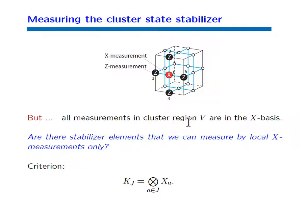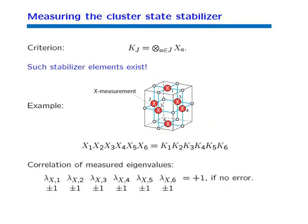All measurements in the cluster region V are in the X basis. Since we are primarily interested in quantum error correction in this region, which fills most of the cluster, and the qubits are measured in the X basis, we will not be able to read out the outcomes of Z-measurements locally. If all measurements are in the eigenbasis of sigma X, the stabilizer elements we can read out must be tensor products of sigma X's and identities. The question is whether any such stabilizer elements exist — and it turns out they do.